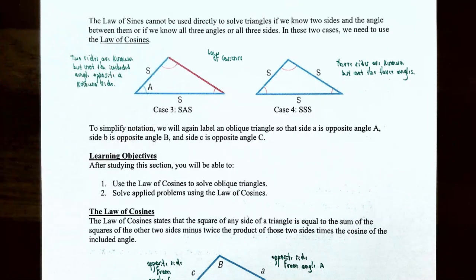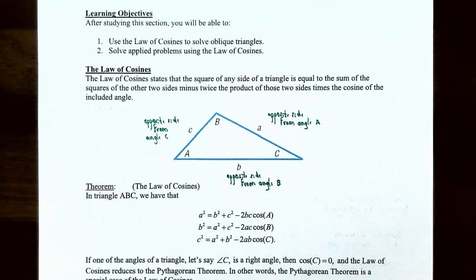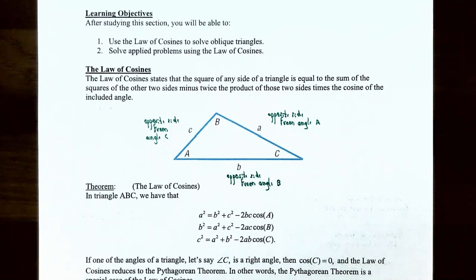You need to use what's called the law of cosines. In this video we're going to talk about how to use the law of cosines to solve oblique triangles and also how to solve applied problems using the law of cosines. The law of cosines states that any square of any side of a triangle is equal to the sum of the squares of the other two sides minus twice the product of those two sides times the cosine of the included angle.